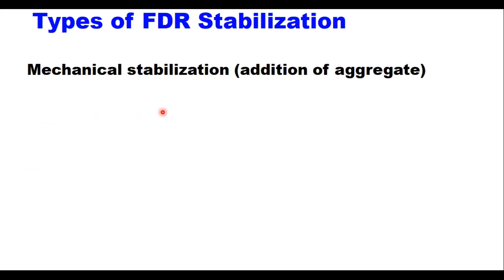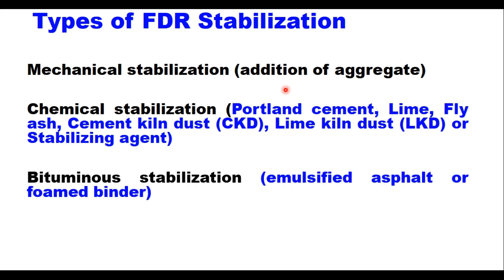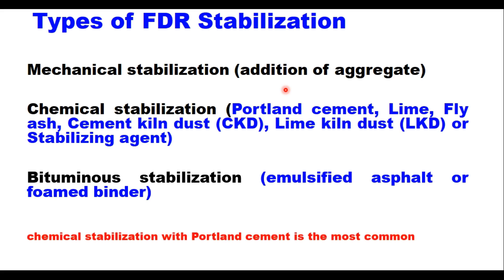In case of mechanical stabilization, aggregates are added to meet the deficiency in grading, whereas in chemical stabilization, Portland cement, lime, fly ash, cement kiln dust, lime kiln dust, or a combination of these or a commercially available stabilizing agent is used to stabilize the layer. In bituminous stabilization, emulsified asphalt or foam binder is used. Chemical stabilization with Portland cement is the most common type of FDR stabilization in the country.